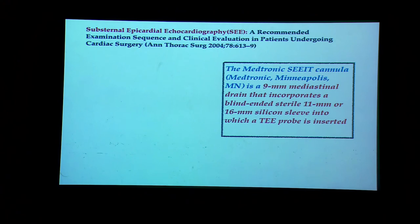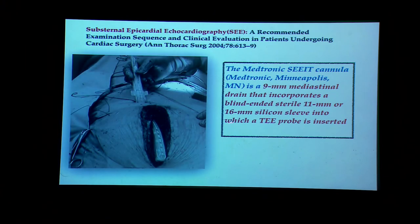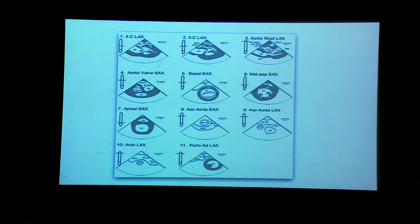One additional modality described in the literature is substernal epicardial echocardiography. In this technique, a 9-mm mediastinal drain incorporated with a blind-ended 11 mm or 16 mm silicone sleeve is placed substernally. The patient is sent to the ICU with the sleeve in place without a drainage tube. Whenever required, a TEE probe can be inserted into this drainage sleeve to evaluate post-operative problems. However, we have never tried this technique and do not plan to, as we are comfortable with standard TEE and epicardial echocardiography.